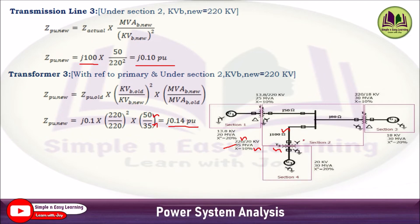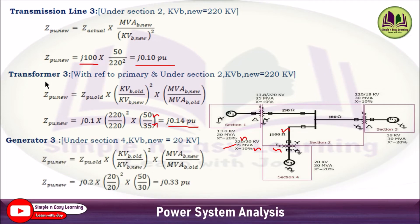Finally, for generator G3 in section 4 (base kV = 20 kV, rated 30 MVA, 20% reactance): Z_pu_new = j0.2 × (20/20)² × (50/30) = j0.33 per unit. We have now found the per unit impedance of all components and will draw the impedance and reactance diagram with all values substituted.